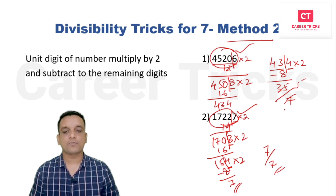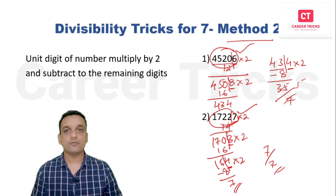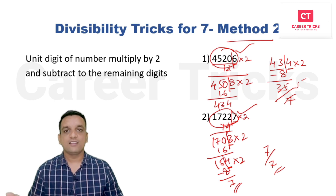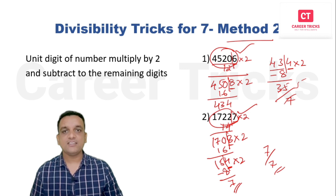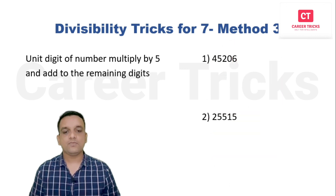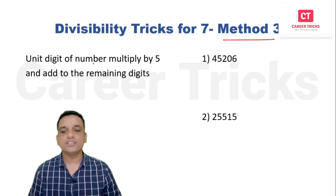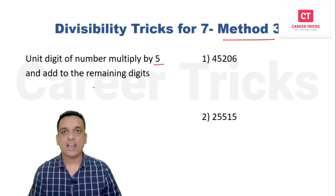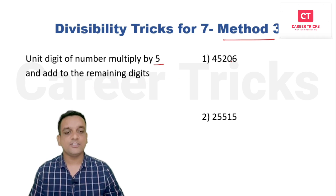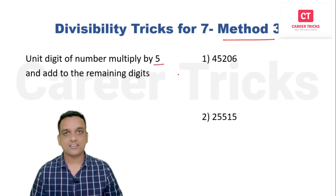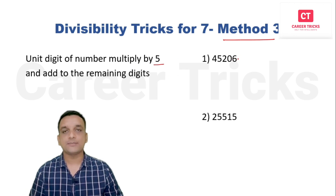Now we come to the third method. In the third method, we take the unit digit, multiply by five, and add the result to the remaining digits. This is similar to method two, but instead of subtracting and multiplying by two, here we add and multiply by five.